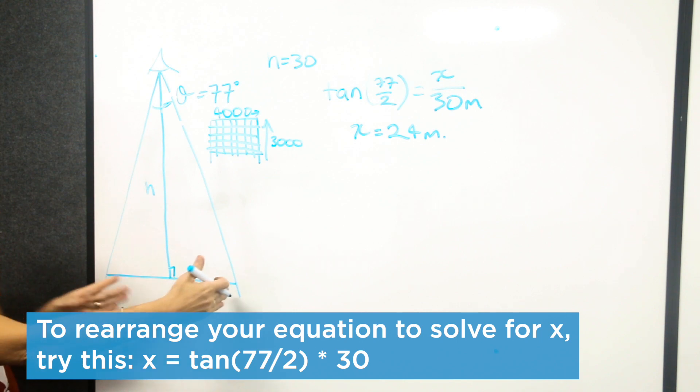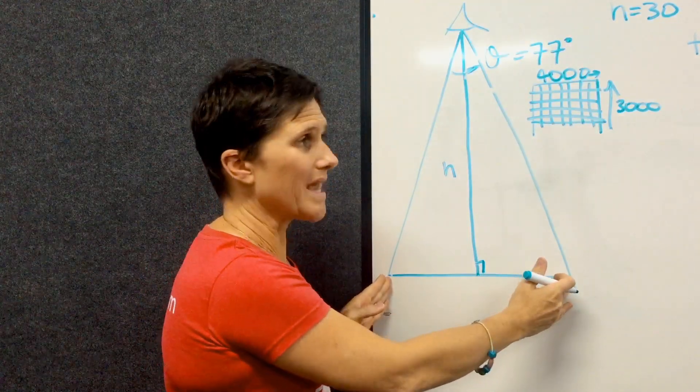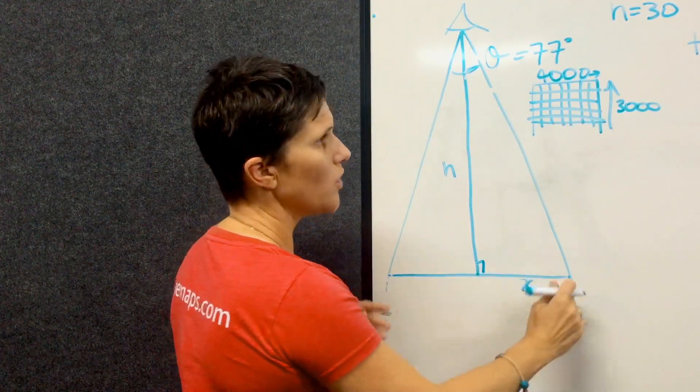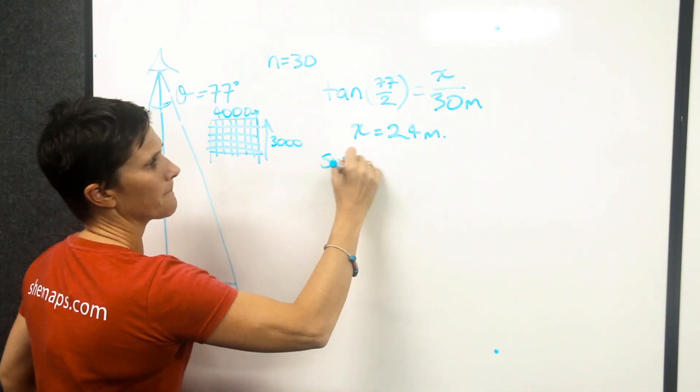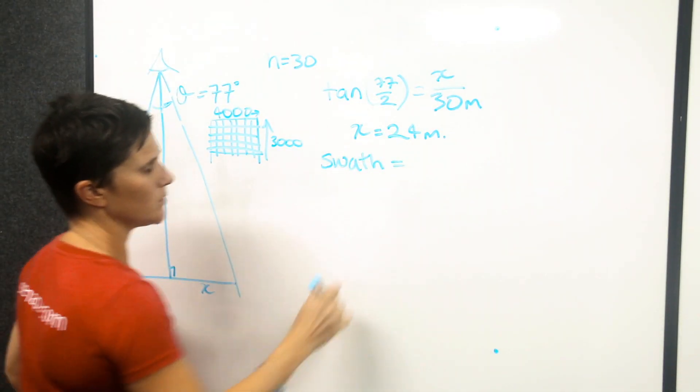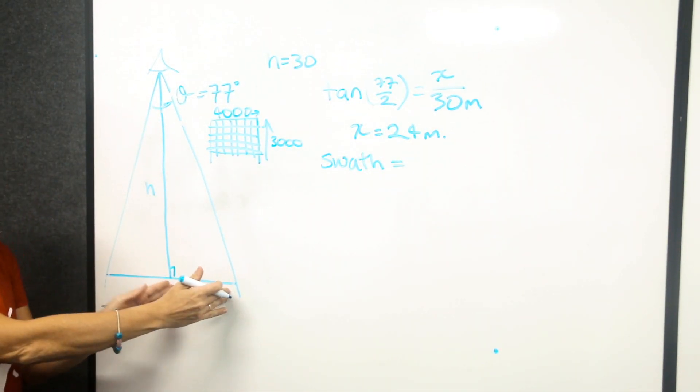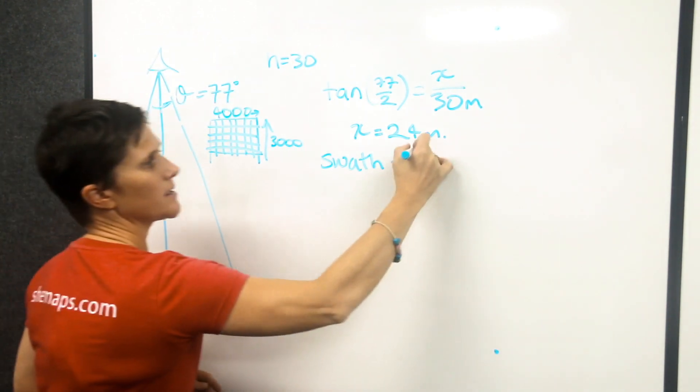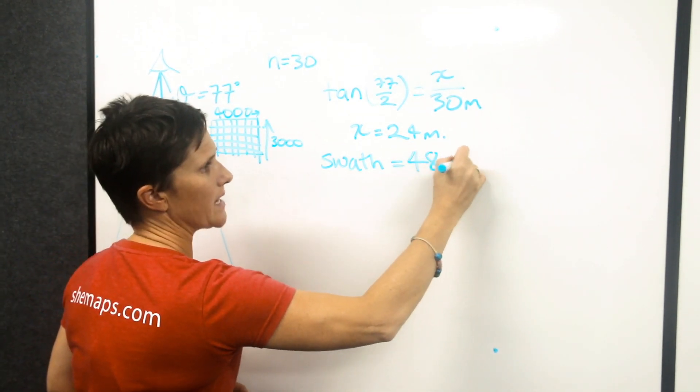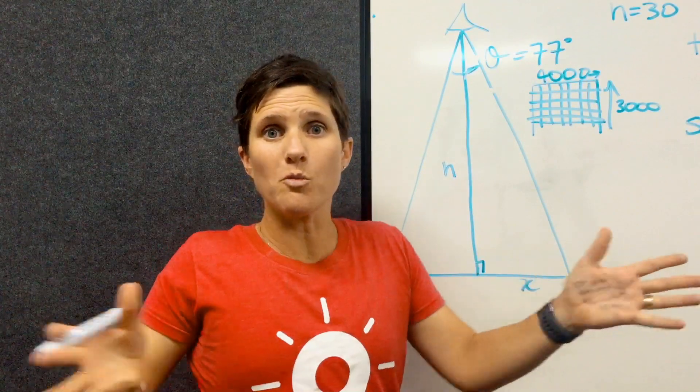So what does that mean? Well, that's half the footprint that we have here, so our total swath equals 2 times x, right? So double it. So it's about 48 meters in terms of that footprint wide.